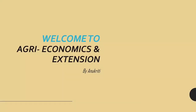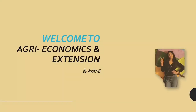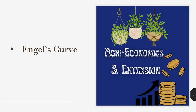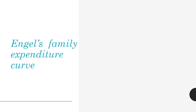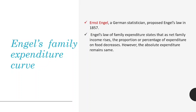Welcome to Agri Economics and Extension by Anukriti. Today's topic is Engel's curve. Since in my last video I discussed all types of goods, today we can discuss Engel's curve. The video will be short and simple so that your concept gets clear. Engel's Family Expenditure Curve — Ernst Engel was a German statistician who proposed Engel's law in 1850. Engel's curve is based on Engel's law. Engel's law states that as net family income rises, the proportion or percentage of expenditure on food decreases; however, the absolute expenditure remains the same.